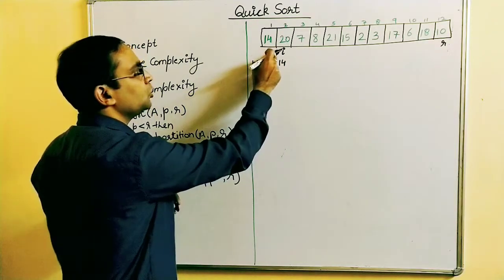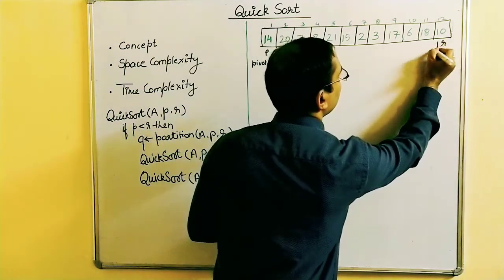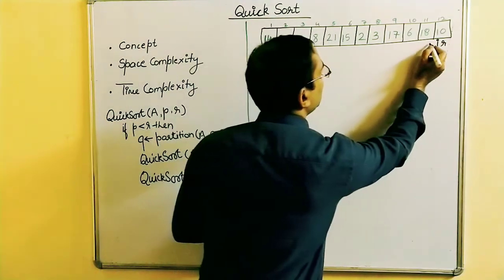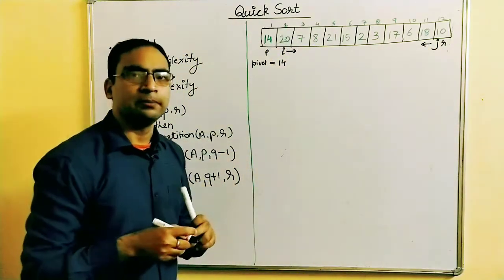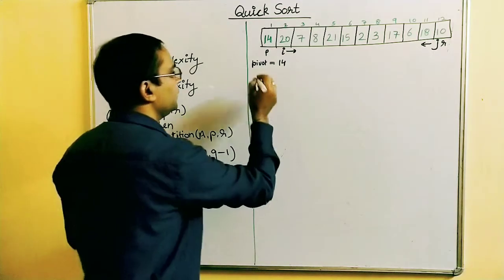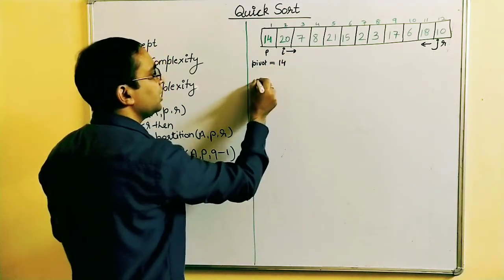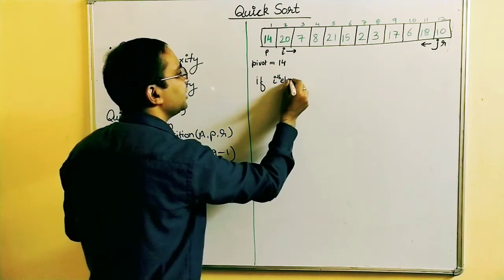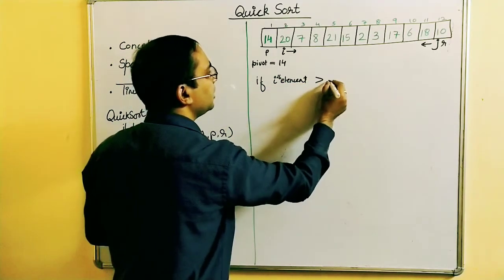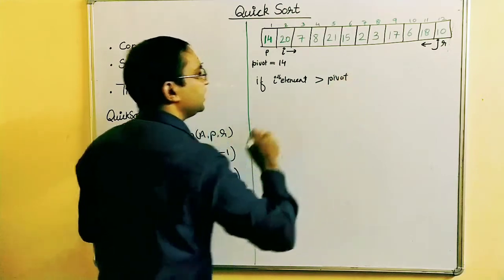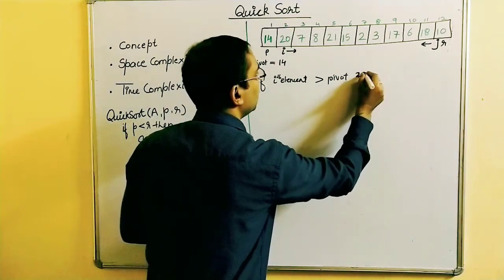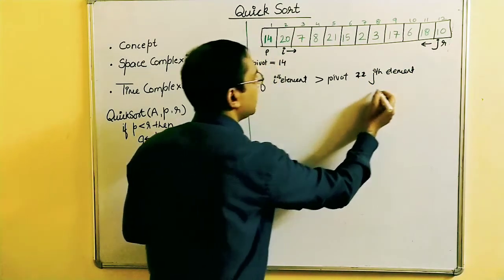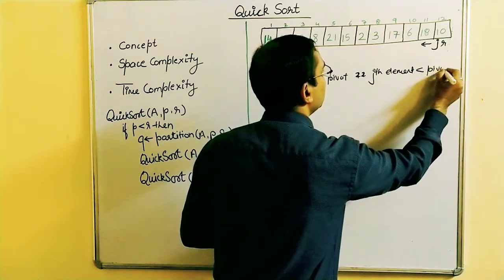We take index I just next to the pivot element, and from the other side we take index J. I will move to the right and J will move to the left, and we perform comparisons. The first condition: if the element at index I is greater than the pivot, and the element at index J is smaller than the pivot — this is the condition for a swap.